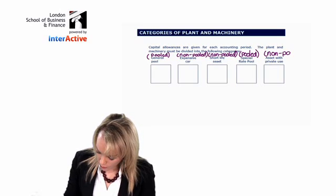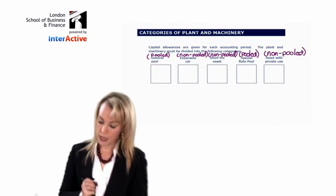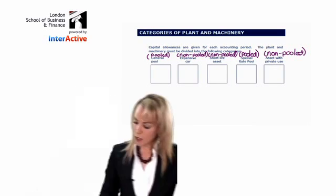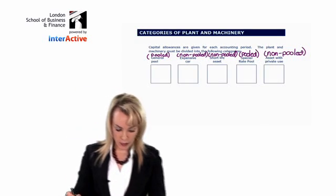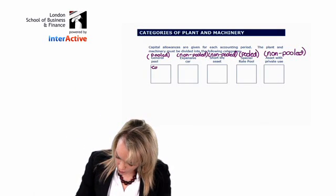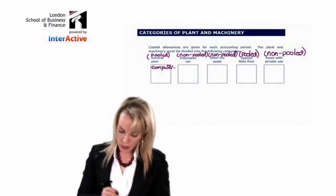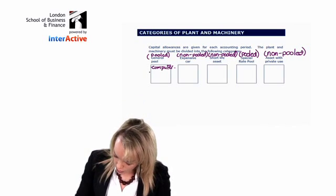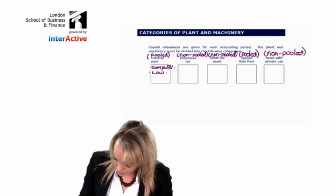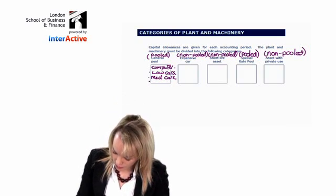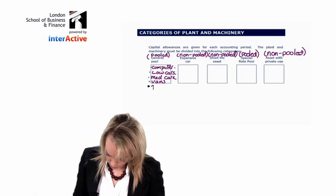Pooled means you can have more than one item in there, and non-pooled means there's only one item per box. The general pool will have things in it like computers, things like low CO2 cars and medium CO2 cars and vans and tables.